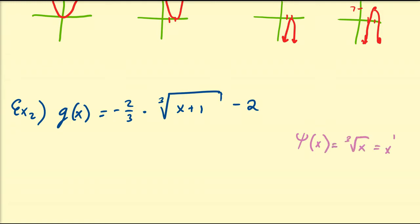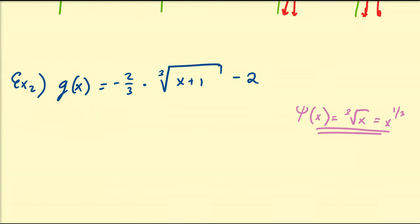You need to know what that curve looks like. So g1(x) = ∛x — that's going to look like this curve. It has that sideways x-cubed type of behavior.